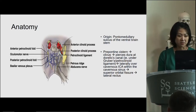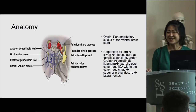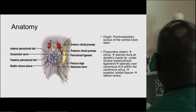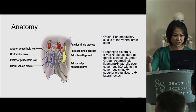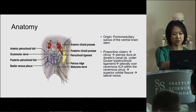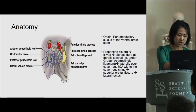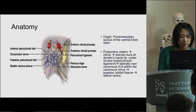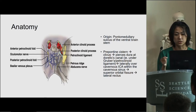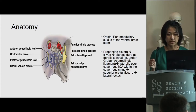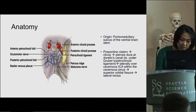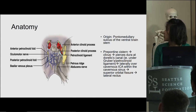I'll start off with the anatomy of the abducens nerve. I wasn't aware there would be so many people here with varying levels, so I'll describe what you're seeing. This is the posterior view of the clivus. If you can imagine the brainstem is right here, the abducens actually comes out of the pontomedullary sulcus of the ventral brainstem. It travels anteriorly and superiorly towards the clivus where it pierces the dura — you can see where it pierces the dura here. It is at the location of the petroclinoid ligament.